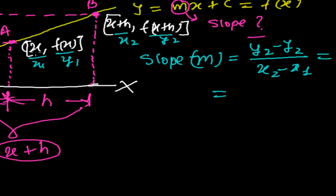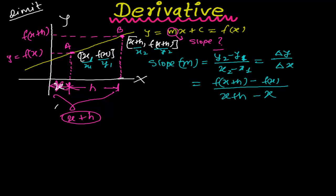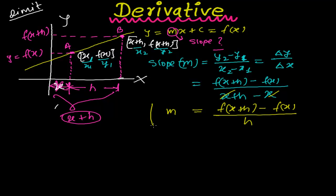So, y2 here is f of x plus h, minus y1 which is f of x, whole divided by x2 which is x plus h, minus x1 which is simply x. We can cancel this x and x, and finally we get the slope as f of x plus h minus f of x over h. This is the slope of the line y equals mx plus c.